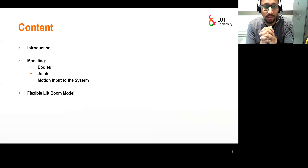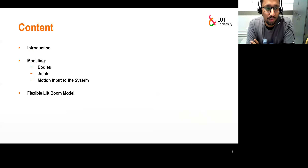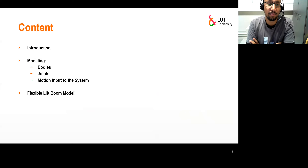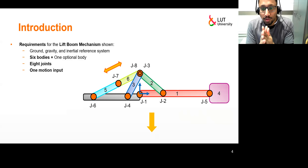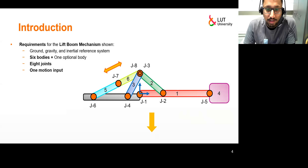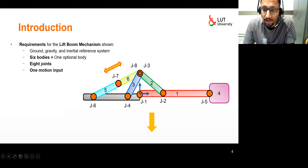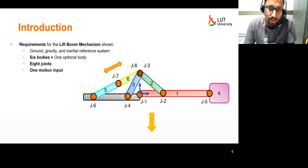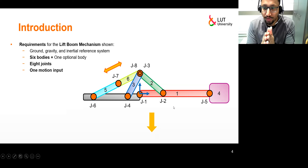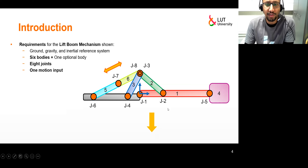Before moving on, here are the list of contents I will be covering. First I will brief you about the requirements in the introduction section. Then as per our normal process we'll model the number of bodies, joints, and input motion to the system. At the end I will show you how we can model the flexible lift boom. This is the system we want to model — the lift boom mechanism where body one in red is the lift boom. We want to model it first as a rigid body so that once the entire system is working we'll replace it with a flexible body.